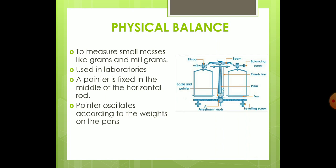The physical balance is used to measure small masses like grams and milligrams. It is usually found only in laboratories. It has a fixed pointer in the middle, and the pointer oscillates — moves to one side or the other — according to the weights placed. There is a pillar in the middle, and on the two outer sides you have the scale pans. The pointer moves depending on the weight on each pan.